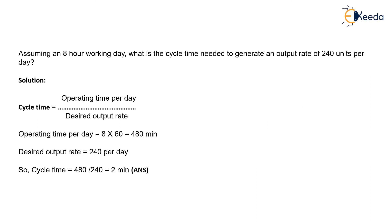Let's have an example. Assuming an 8-hour working day, what is the cycle time needed to generate an output rate of 240 units per day? In order to generate 240 units per day, the cycle time equals the operating time per day divided by the desired output. Since the operating time is 8 hours per day, 8 into 60 gives us 480 minutes, and the output rate is 240 per day, giving a cycle time of 480 divided by 240.